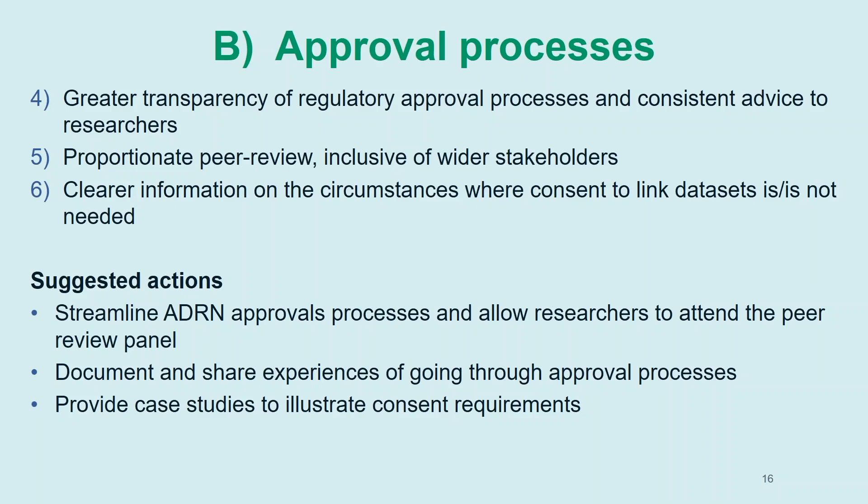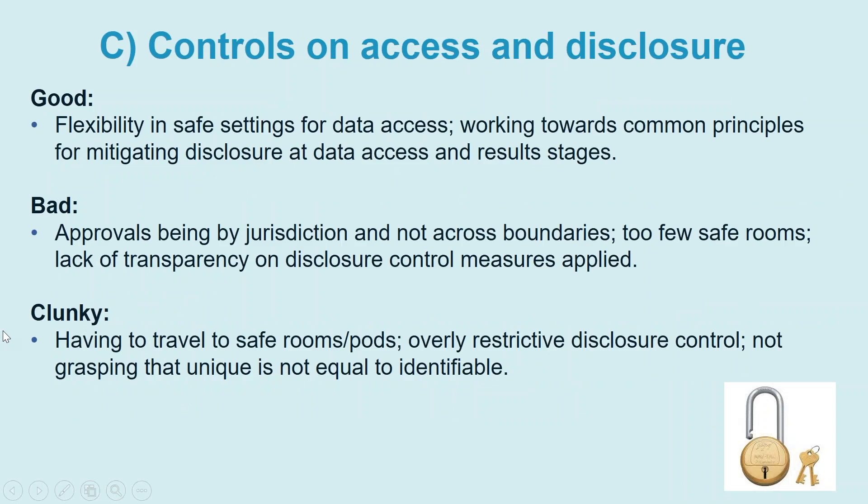A further action was to provide case studies to illustrate consent requirements, so that when researchers are putting proposals together, they can look at what is actually needed for a study like theirs. For controls on access and disclosure, what was good was the flexibility of the safe settings for data access and working towards common principles for statistical disclosure control. What was bad: approvals being just by jurisdiction and not possible across boundaries, too few safe rooms and safe pods, and a lack of transparency about the control measures applied to data when viewed by the researcher.